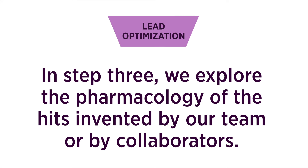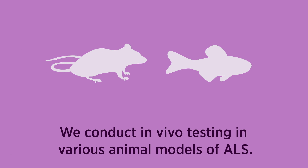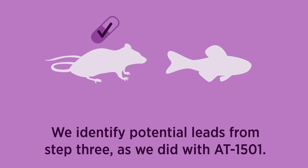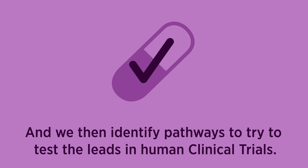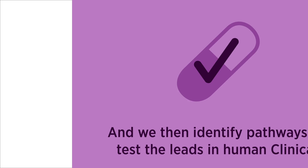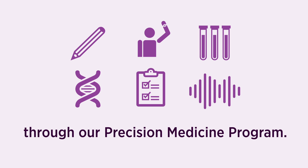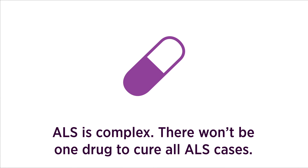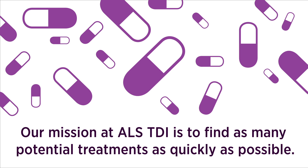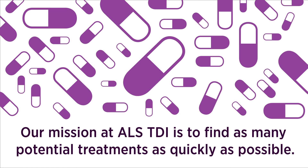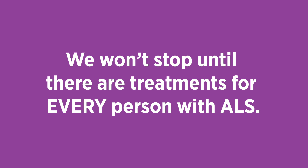In Step 3, we explore the pharmacology of the hits invented by our team or by collaborators, and conduct in vivo testing in various animal models of ALS. We identify potential leads from Step 3, as we did with AT-1501, and then identify pathways to try to test these in human clinical trials. While we can't control what happens in Step 4 — clinical trials — we are working to make them faster and more efficient through our precision medicine program. ALS is complex; there won't be one drug to cure all ALS cases. Our mission at ALS TDI is to find as many potential treatments as quickly as possible, and we won't stop until there are treatments for every person with ALS.